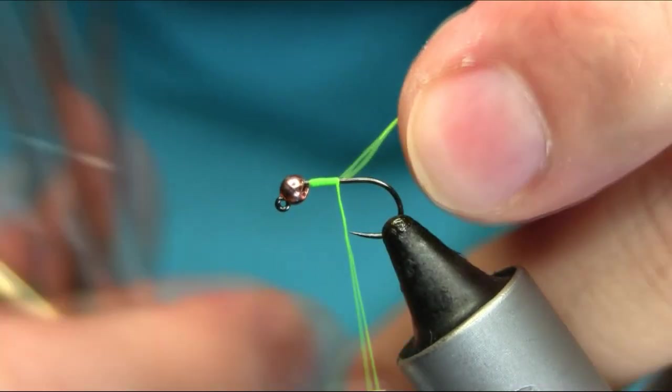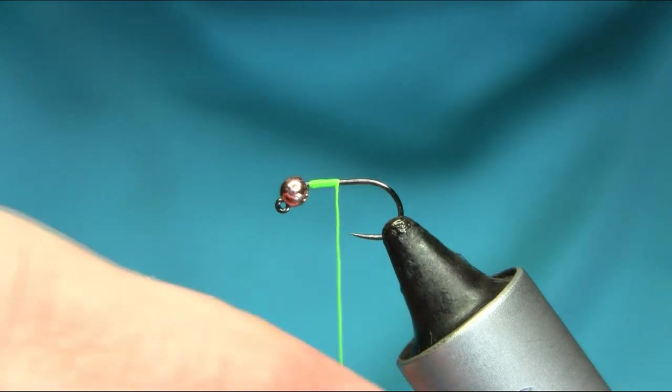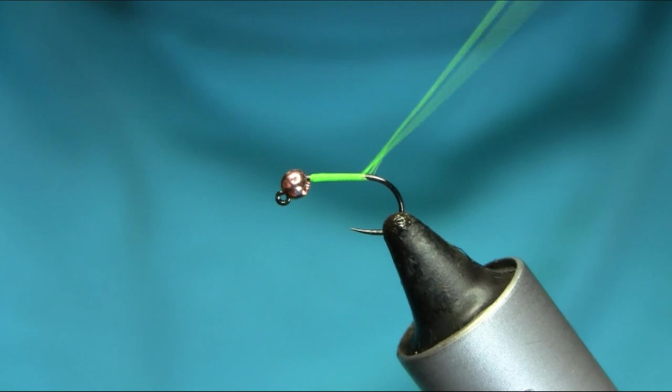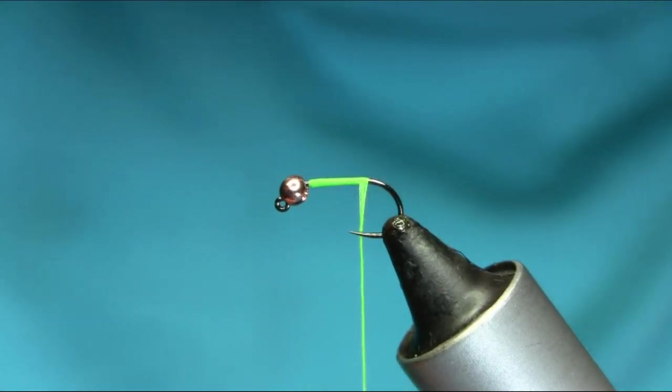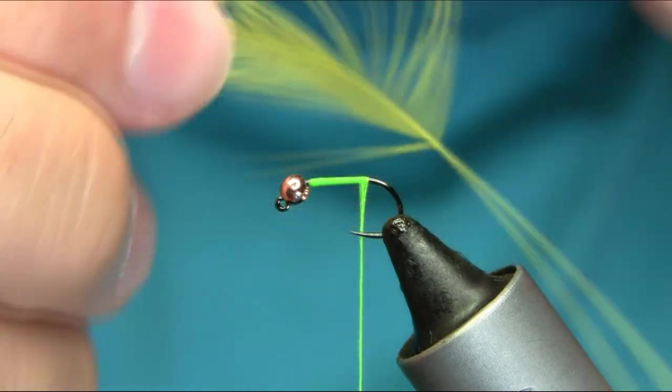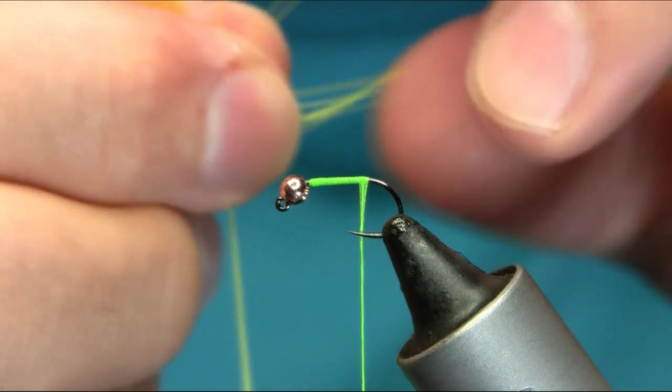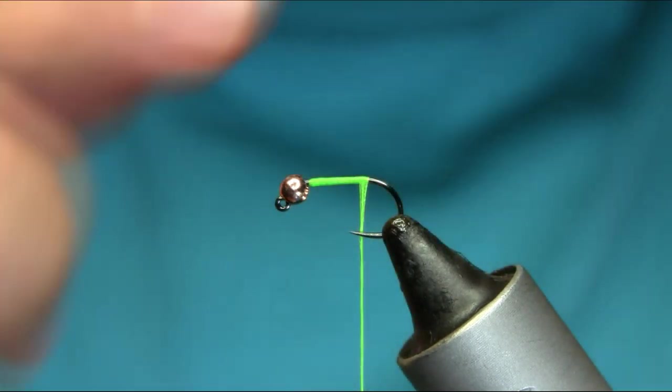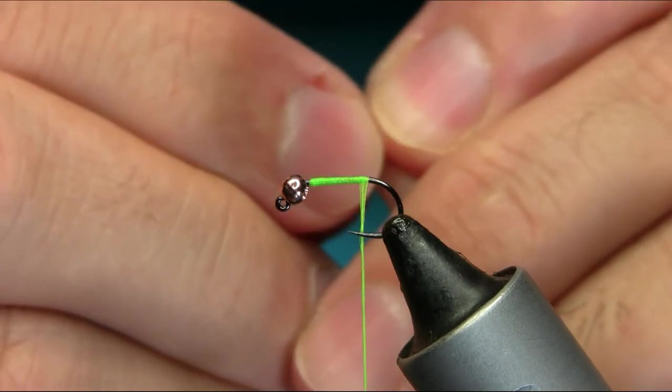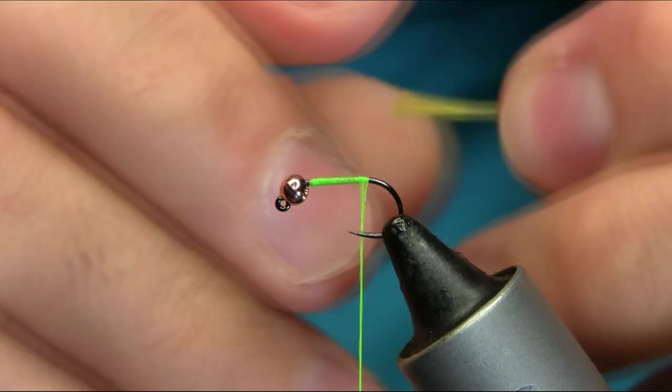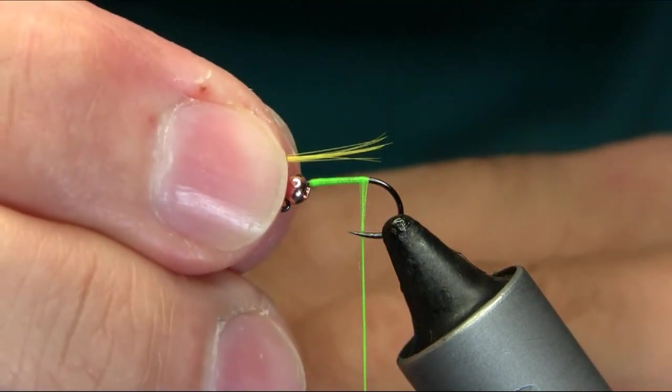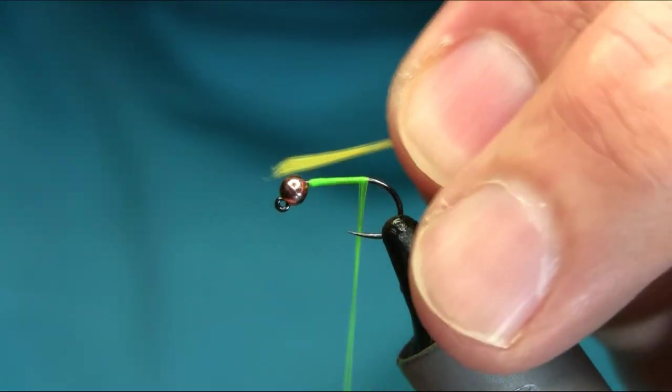I need a little bit thick body, so I'm going all the way down and stopping just before the bend. For the tail, this is dyed yellow coq-de-leon. Take a pinch and make sure you don't put too much. Just take your time, just a bit longer than the body.